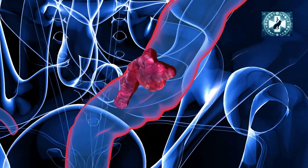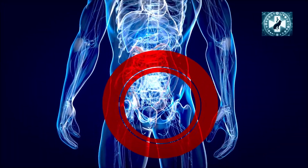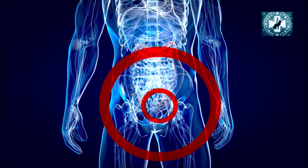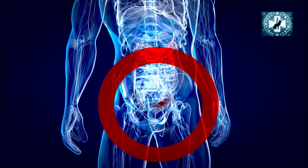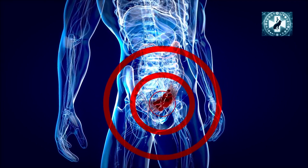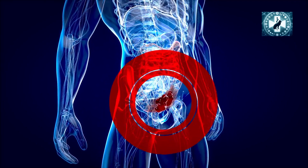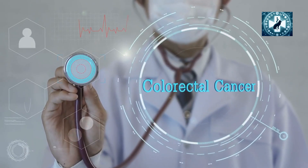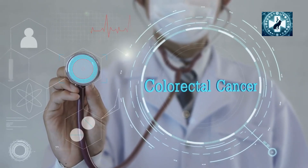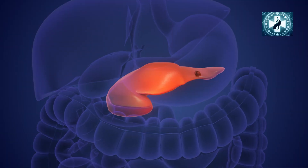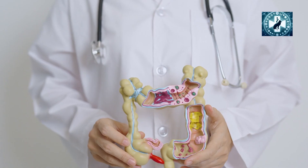Survival rates for colorectal cancer vary significantly based on the stage at diagnosis. Early-stage cancers localized to the colon or rectum have a high five-year survival rate, whereas later-stage cancers with distant metastasis have significantly lower survival rates. Improvements in treatment and early detection have led to overall increased survival rates in recent decades.